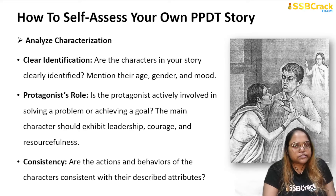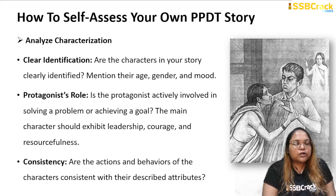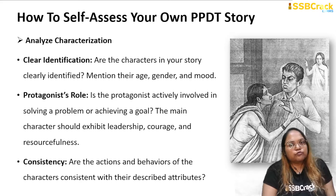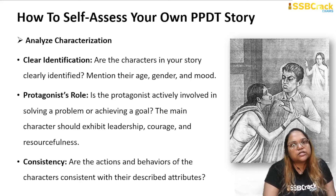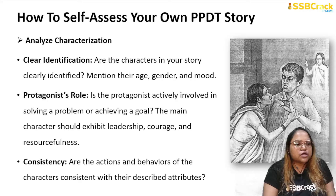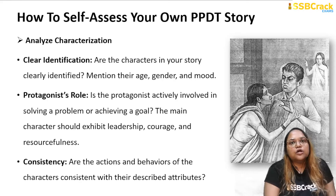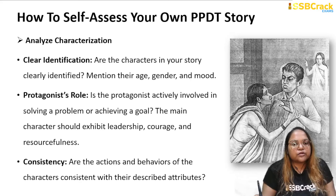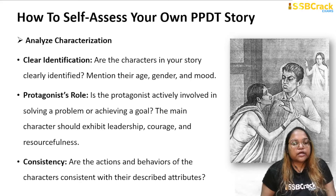The second thing to analyze is characterization. For the characters you put in the story, you need a clear identification — their age, gender, and mood as seen in the PPDT picture. Based on these, you can determine what kind of situation fits the story. You also need to identify the hero's role: the protagonist must have a goal to achieve or a problem to solve, and must come to a decision to take action. The hero's role is the most important aspect to pay attention to.